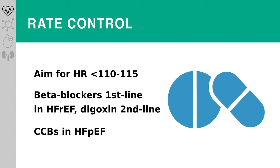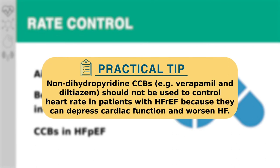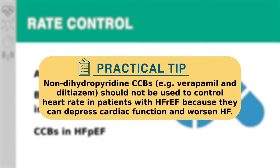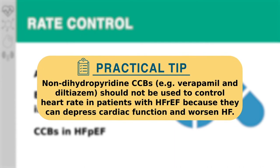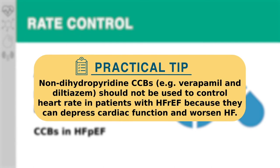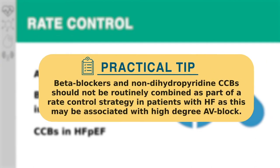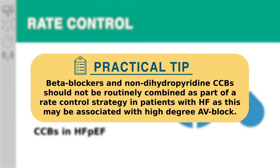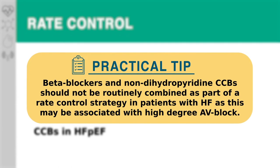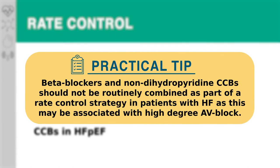Calcium channel blockers could also be considered in patients with heart failure with preserved ejection fraction, but they are contraindicated in patients with heart failure with reduced ejection fraction. Non-dihydropyridine calcium channel blockers should not be used to control heart rate in patients with heart failure with reduced ejection fraction because they can depress cardiac function and worsen heart failure. In addition, beta blockers and non-dihydropyridine calcium channel blockers should not be routinely combined as part of a rate control strategy in patients with heart failure, as this may be associated with high-degree AV block.